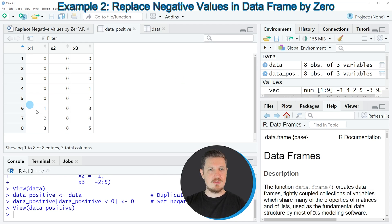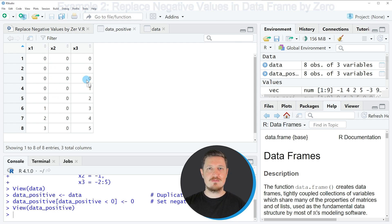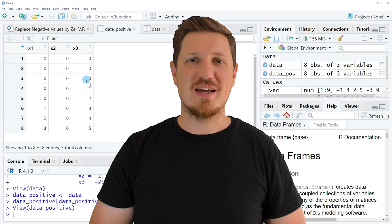After clicking on this data object a new window is opened which is showing the values in our updated data frame. As you can see we have replaced all negative values by the value zero. That's all I wanted to explain in this video.